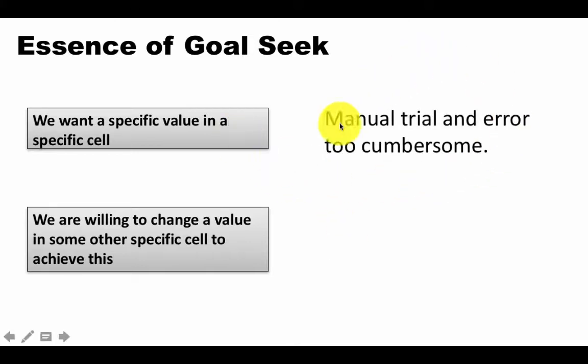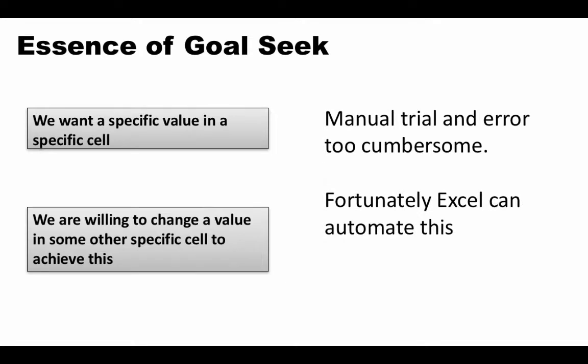We could get it by manual trial and error — keep plugging in different values: currently the growth rate of sales price is 5%, try 5.1, 5.2, 5.25, 5.366, and so on. But that is too cumbersome when we want to find precisely the value which results in a profit of 250,000. The computer can do the trial and error much quicker than we can, and that is precisely the Goal Seek feature of Excel.